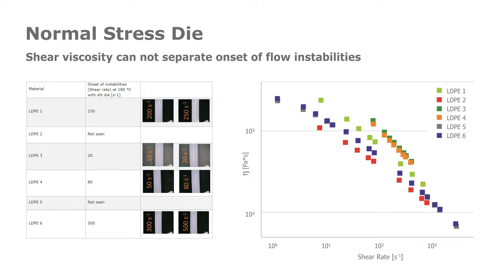LDPE 3 and 4 overlapped here, and we see no difference in the onset, followed by LDPE 1. This is then correct, but LDPE 5 and 6 show another overlap. LDPE 5 has no flow instability and 6 has a late onset of flow instability. So a clear discrimination cannot be made.